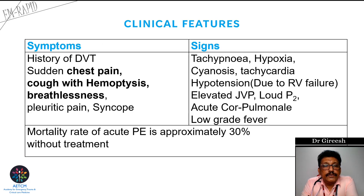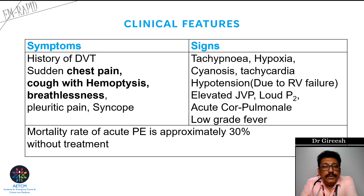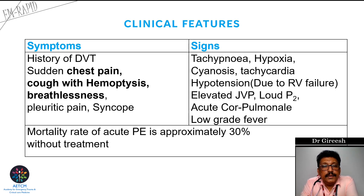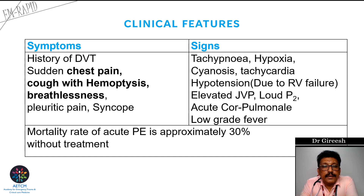We will mainly discuss the clinical features of acute pulmonary embolism. The patient can have a history of deep vein thrombosis — note that superficial vein thrombosis may not present with pulmonary embolism. Symptoms include sudden chest pain, severe cough with hemoptysis, and breathlessness. Many patients can present with pleuritic type of chest pain, especially if the embolism is small. If there is RV failure, the patient can also have syncope.